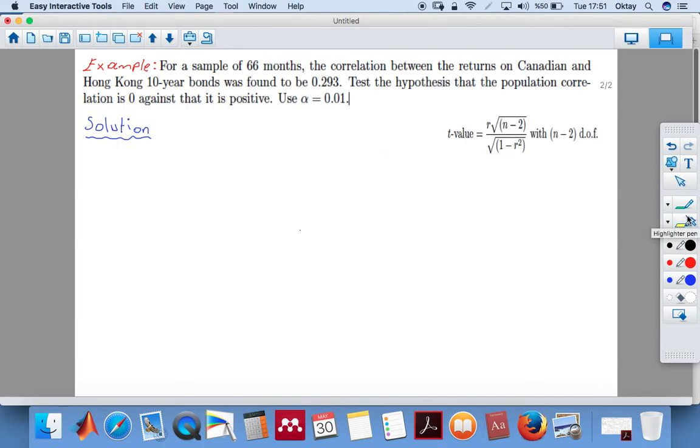Use alpha equals 0.001. So we're going to use the formula, and you're going to see it in the exam formula sheet. The t-value is calculated by r times square root of n minus 2, all over square root of 1 minus r squared, with n minus 2 degrees of freedom.